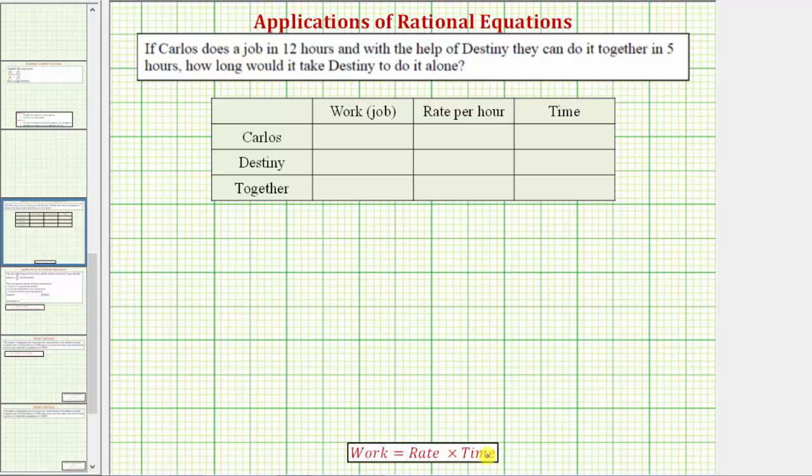Because work equals rate times time, let's record all the given information in this table, where we have the work, rate, and time for Carlos working alone, Destiny working alone, and working together.